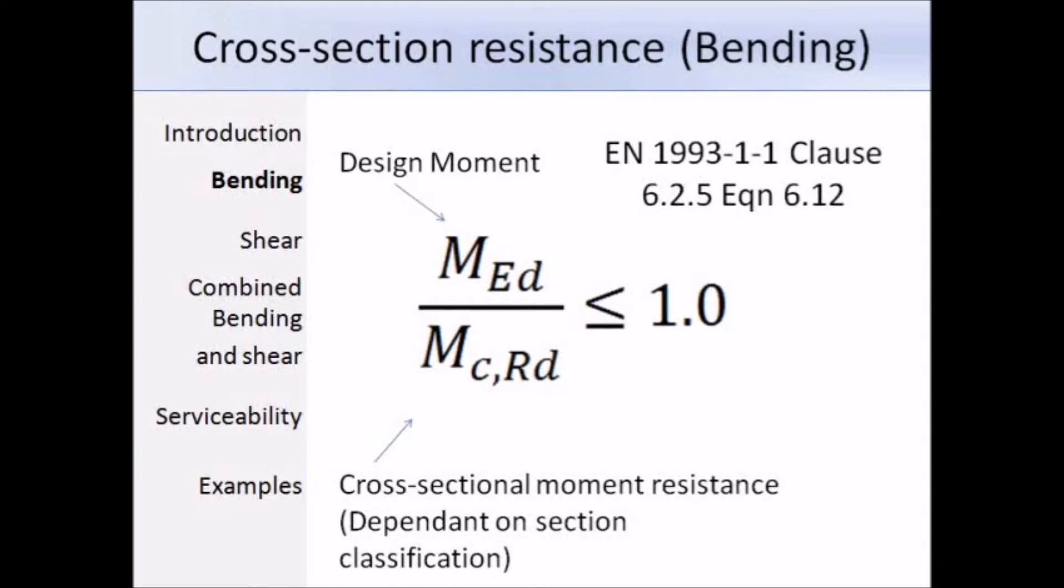To make sure the resistance of the cross-section is adequate, the following equation must be satisfied: MED divided by Mc,Rd must be less than or equal to 1.0, and this is expression 6.12. What it's telling us is that the design moment MED must be less than the cross-sectional moment resistance Mc,Rd. As you'll see in the next few slides, the equation to calculate Mc,Rd will depend on the class of the section. It's also worth mentioning that for the design resistance of a cross-section bending about one principal axis, it's determined in a similar manner to BS 5950 part 1.